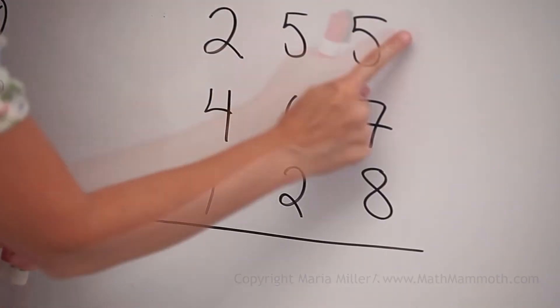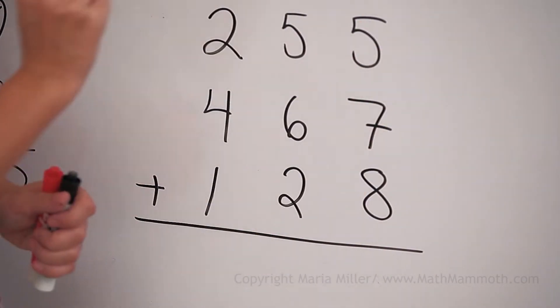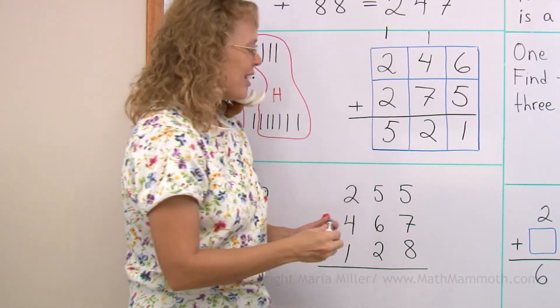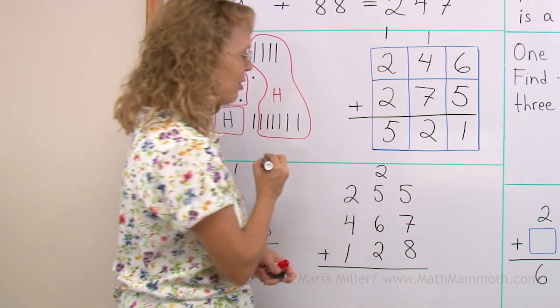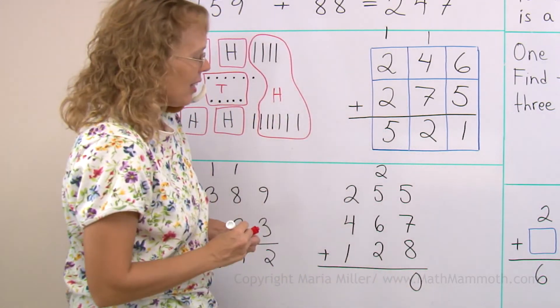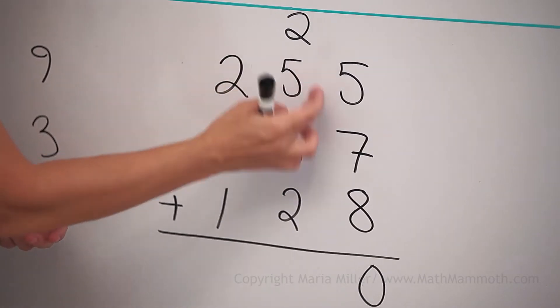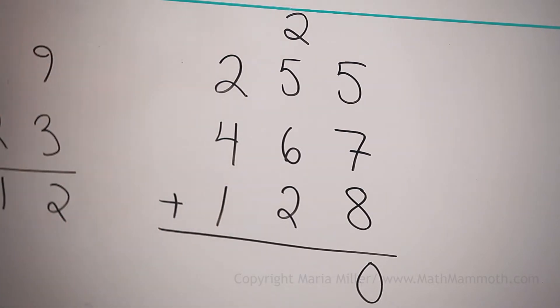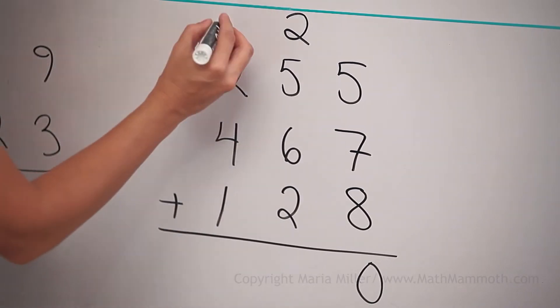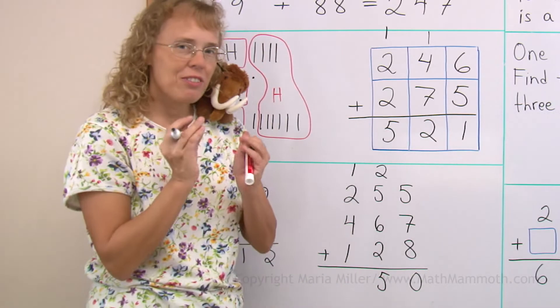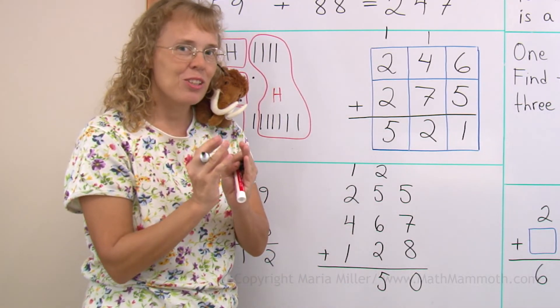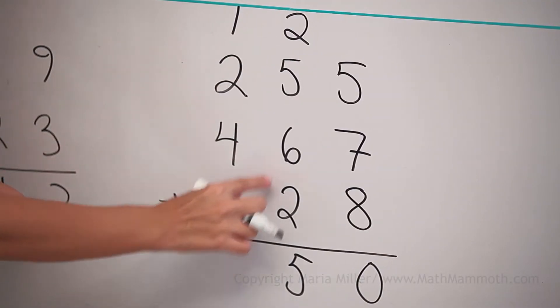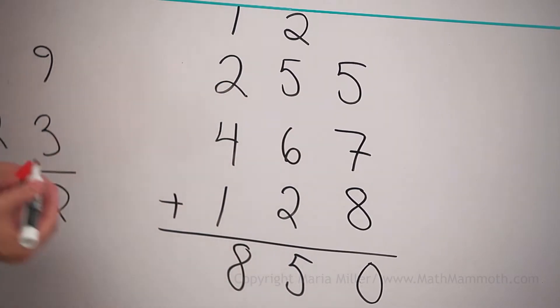Over here, in the ones, 5 plus 7 plus 8, 5 plus 7, 12. Then 12 plus 8, 20. 20 means 2 10s, we get 2 new 10s regrouped over here with the 10s and 0 here. And then in the 10s, I might add 5 plus 6 first. I remember that's 11. And then 11 and these two make 4. 11 and 4, 15. So I write it as 1 and 5. Because of the 15 10s, 10 10s make a new 100. So there's 1 new 100 there, 5 10s. And then over here, we have 2 and 2 and 4 makes 8. 850.